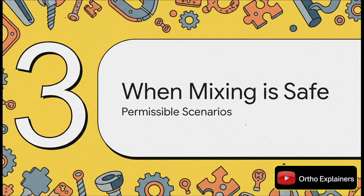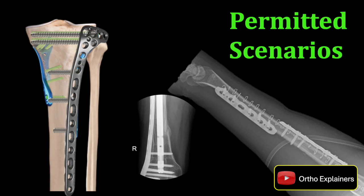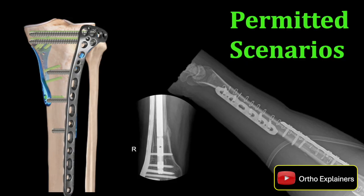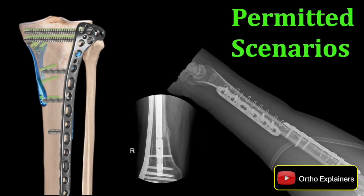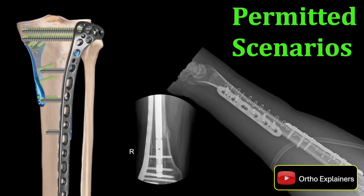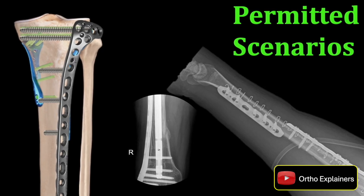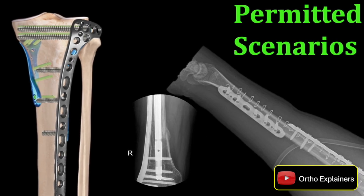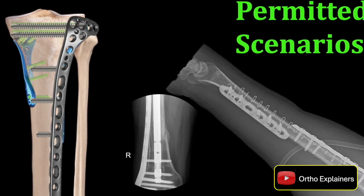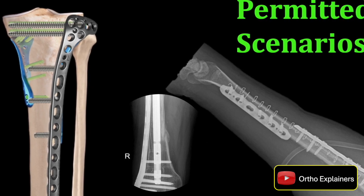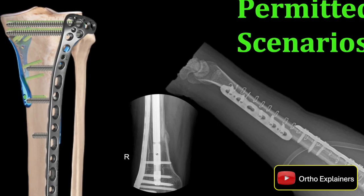With that principle in mind, let's apply it and define the specific scenarios where using dissimilar metals is perfectly acceptable. Going back to our opening question — the titanium nail and the stainless steel plate — can you proceed? Yes, you absolutely can, provided that the plate does not touch the nail. Other safe examples: you could place a titanium plate proximally and a steel plate distally on the same long bone, or use a stainless steel cerclage wire near a titanium nail as long as it doesn't make contact. The key principle every single time is physical separation — they cannot be touching.